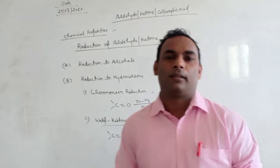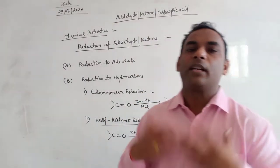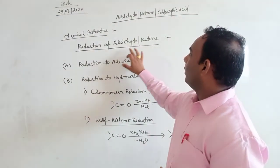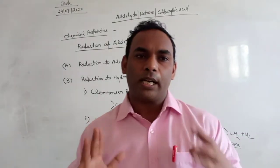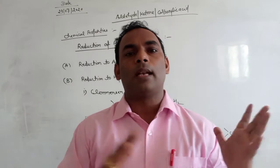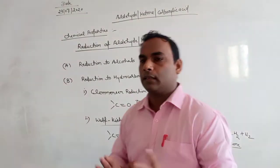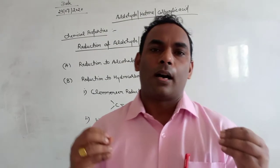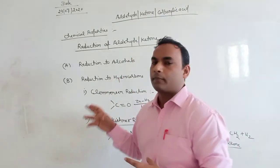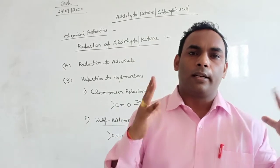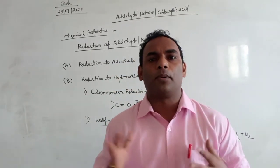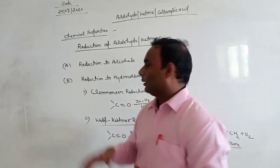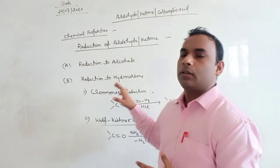Good morning students. Today's topic is the chemical properties of aldehydes and ketones, in which I will teach you the reduction of aldehydes and ketones. There are three important ways to reduce any aldehyde or ketone. The first one is reduction to alcohols — it means aldehydes and ketones are reduced into alcohols in the presence of suitable reducing agents like lithium aluminum hydride or sodium borohydride. This reaction is also covered in the alcohol chapter.